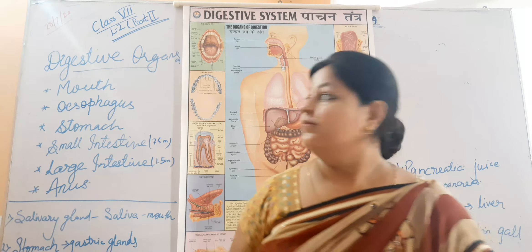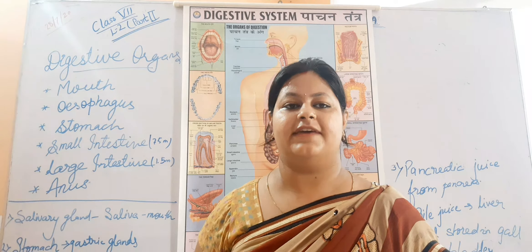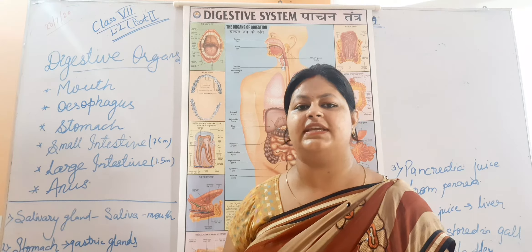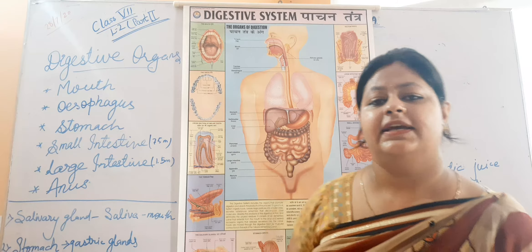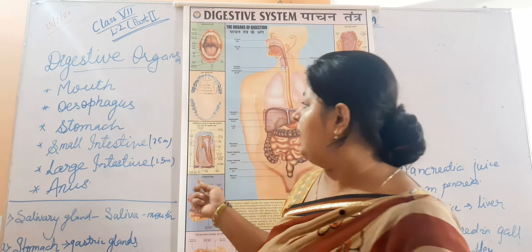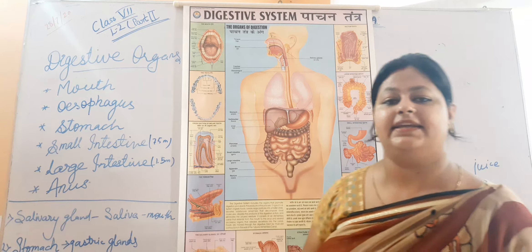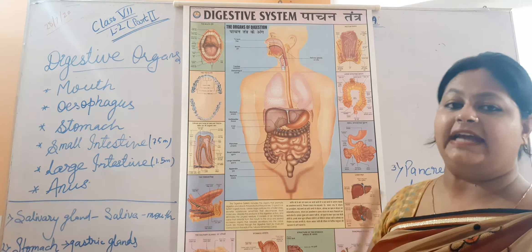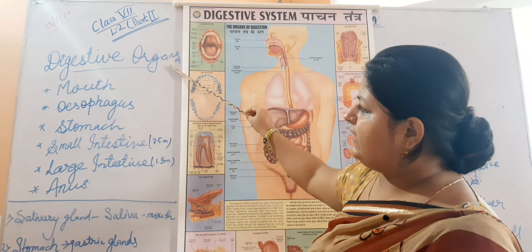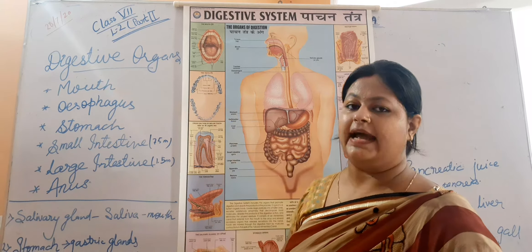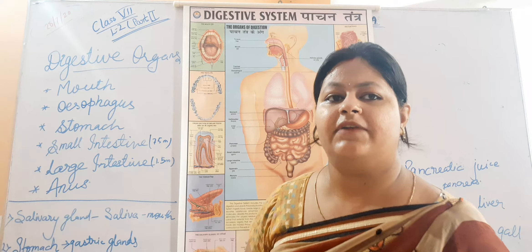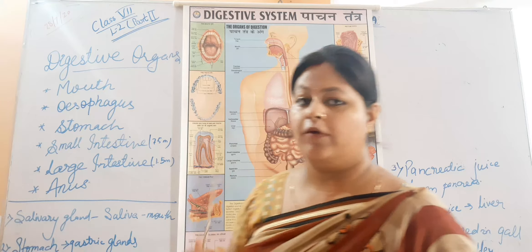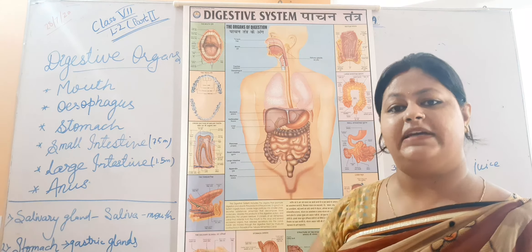Good morning class, myself Pallavi Anand. Today we are in a session of Class 7 Biology on nutrition in animals and human beings. As we have discussed many topics in the previous video — nutrition, types of nutrition, types of teeth: incisors, canine, molars, premolars — we have discussed all of that. Today we are going to discuss the digestive system in human beings.